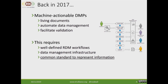There was a need to facilitate validation of DMPs, and we said we needed three things to make it happen: well-defined DMP workflows — knowing who is responsible for what and how stakeholders can interact; infrastructure to support them, such as tools like DMP Online and others; and a common way to represent information, which became the focus of the working group on machine actionable data management plans.